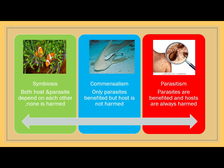Another type of association of host and parasites is known as parasitism. In this case, the parasite is always benefited and the host is always harmed. Examples include protozoan infections such as amoebiasis, helminthiasis, and bacterial diseases. All these diseases come under the association of parasitism. That's all about the host and parasite.